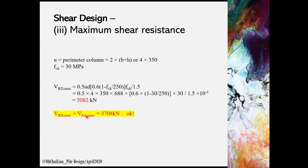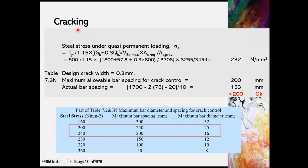Next, we need to perform a check for cracking control. Table 7.2 and 7.3 are used for the check. Steel stress under quasi-permanent loading can be obtained using the equation shown. Once the steel stress is obtained and based on design crack width of 0.3 mm, we can determine the maximum bar spacing and maximum bar diameter using interpolation method. We need to provide and make sure the actual bar spacing is less than the allowable.